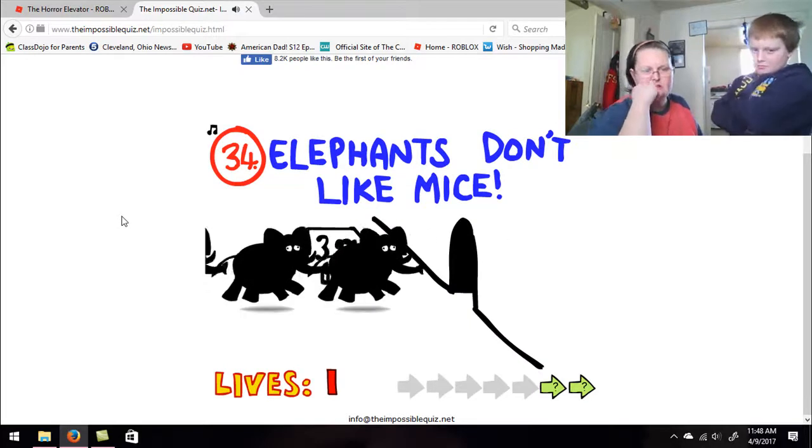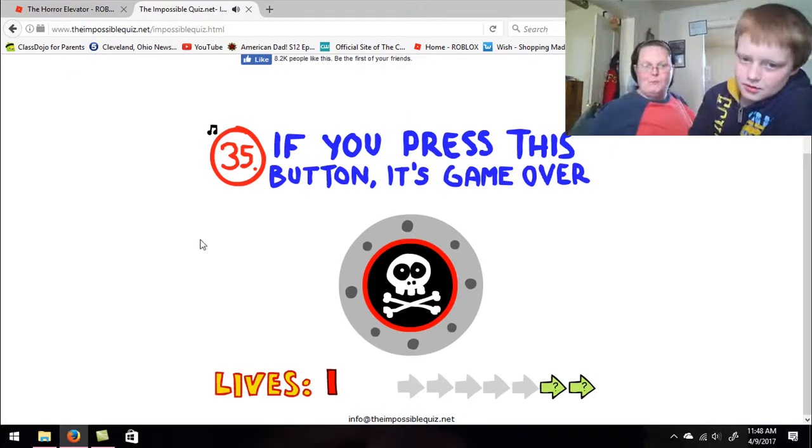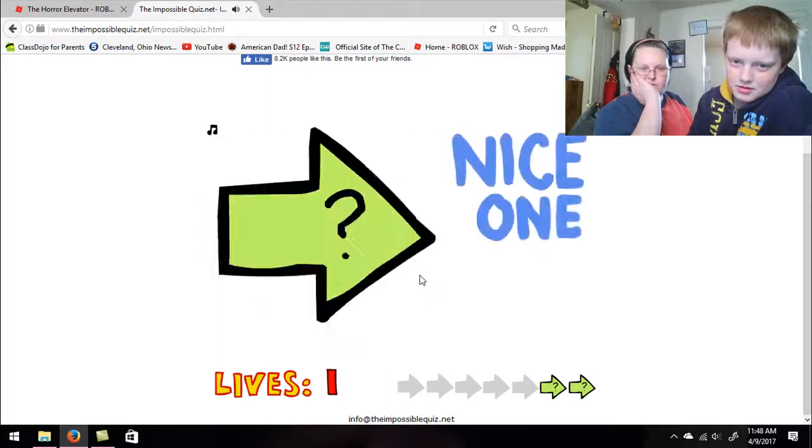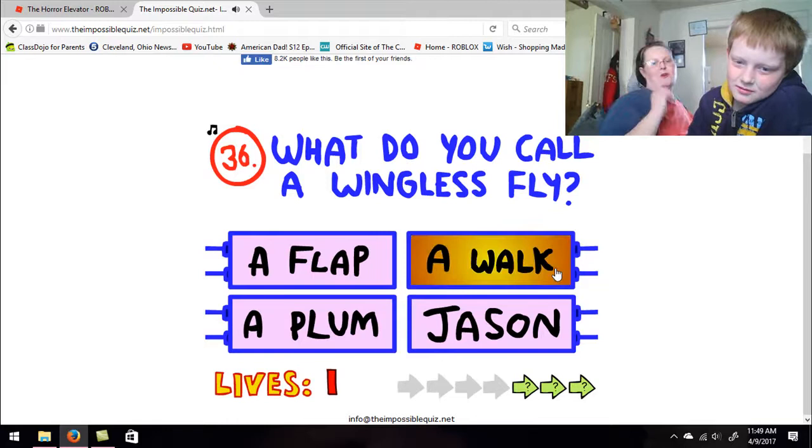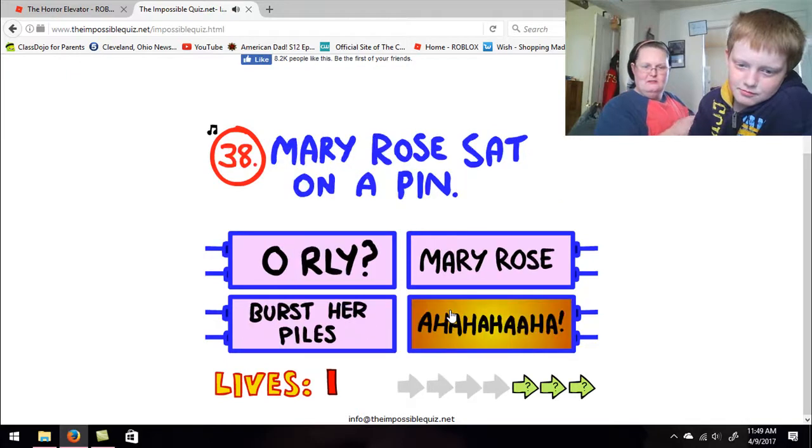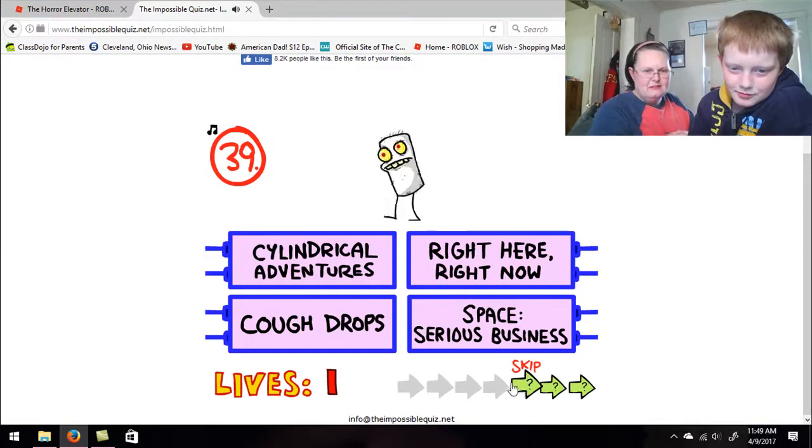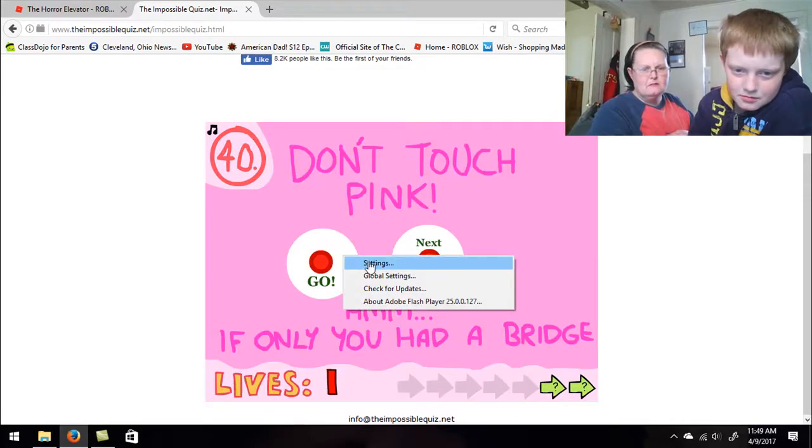Elephants don't like mice. Your mouse is a mice. It's just button, it's game over. What do you call a wingless fly? A walk. Can you get this question wrong? Of course not. Mary Rose sat on a pen. I don't care. That was slick.